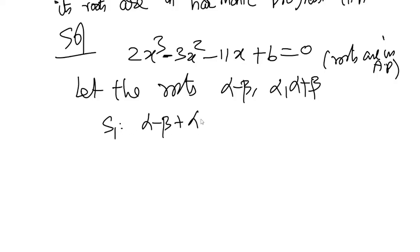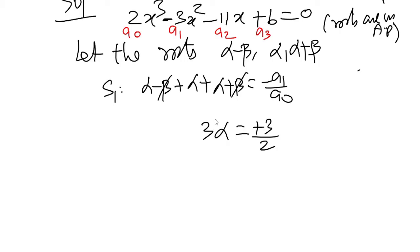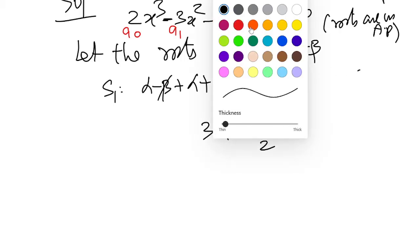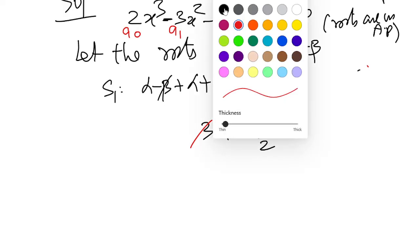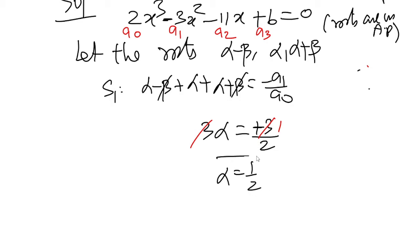Using the sum of roots formula S₁, where α + β = -a₁/a₀. The coefficients are a₀ = 2, a₁ = -3, a₂ = -11, a₃ = 6. So 3α = -(-3)/2 = 3/2. Both sides cancel the 3, giving α = 1/2.